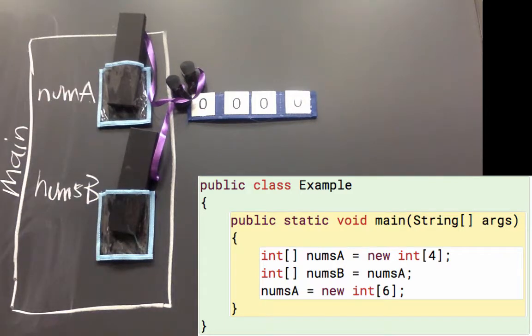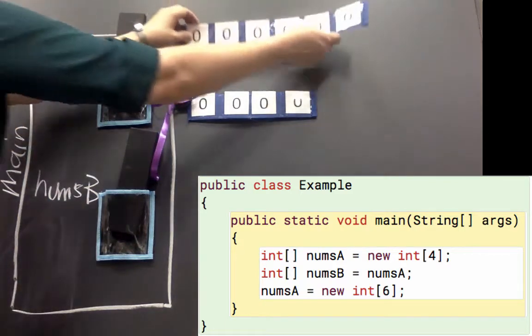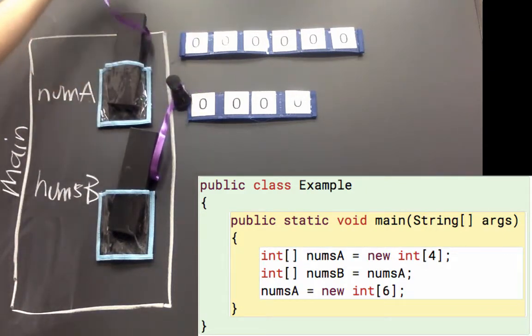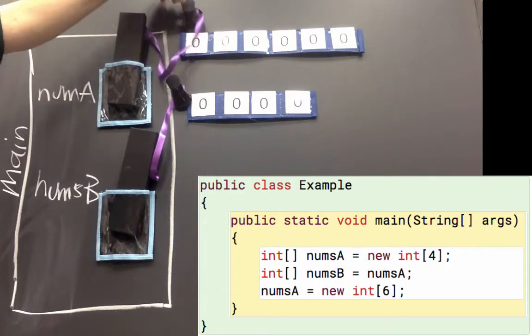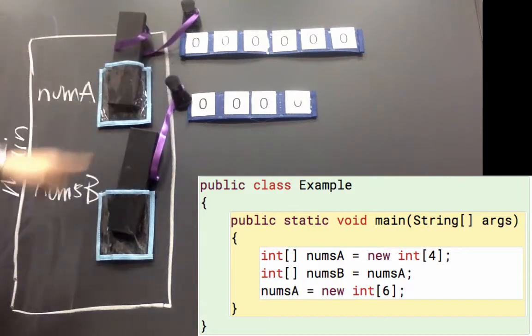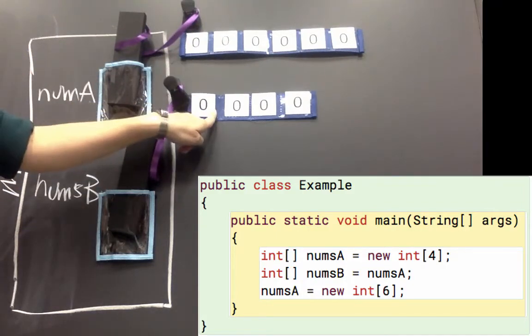So here's my new int array with six elements, and numsA will get reset. So it'll no longer reference the four element array. It now references this six element array. So can you see numsA references my six element array and numsB will reference my four element array.